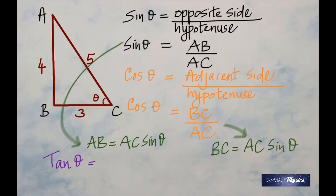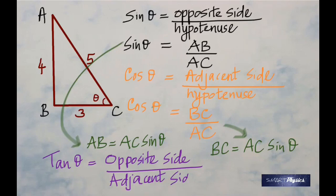Tan theta is defined as the ratio of the opposite side to the adjacent side, which would be AB divided by BC. Remember that while sin theta and cos theta cannot be more than one, tan theta could be more than one.